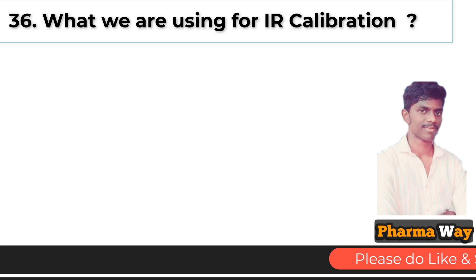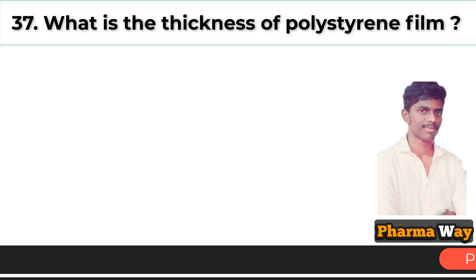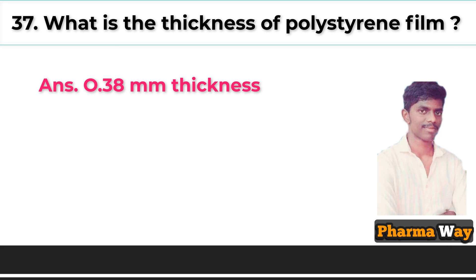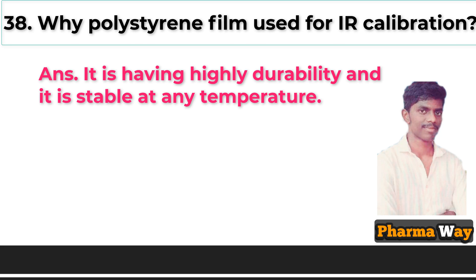What is used for IR calibration? Answer: Polystyrene film is used for IR calibration. What is the thickness of polystyrene film? Answer: 0.38 mm. Why is polystyrene film used? It has high durability and is stable at any temperature.